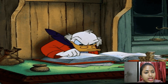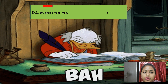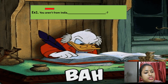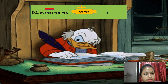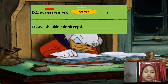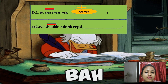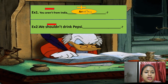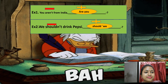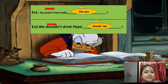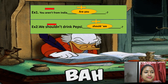Now for negative sentences: 'You aren't from India.' — a negative sentence made with a helping verb. The question tag will be positive: 'are you?' Next: 'We shouldn't drink Pepsi.' — a negative sentence made with a modal verb. The question tag will be positive: 'should we?' So we are done with the chapter. I hope you all are clear. Thank you so much. We will meet in the next class again. Bye-bye.